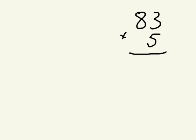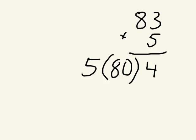So here we have a problem of 83 times 5 and the first thing we want to do is the tens place. So we need five eighties. And if you know your multiplication, we know 5 times 8 is 40. And we can add the zero to make it 400.